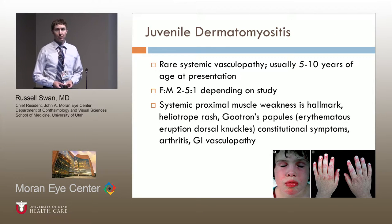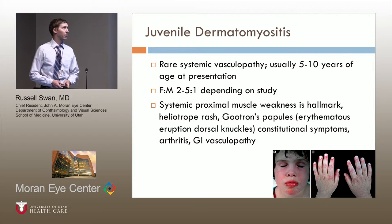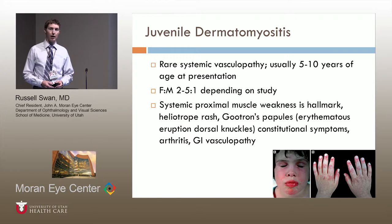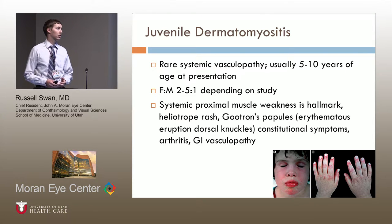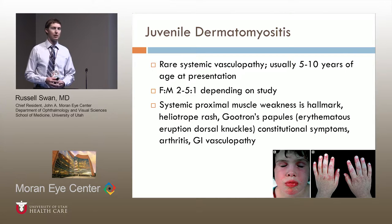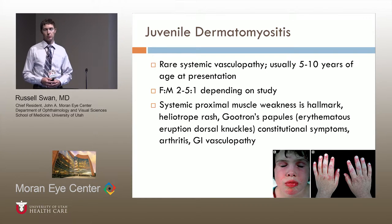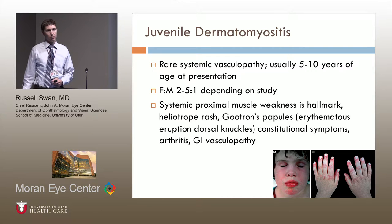Juvenile dermatomyositis is a rare systemic vasculopathy that usually occurs in young children, typically between ages five and ten, with a slight female-to-male predominance of two to five to one depending on the study. The classic findings are systemic muscular weakness, the heliotrope rash, Gottron papules, and associated constitutional symptoms, which were very notable in our patient. You can also have a GI vasculopathy, which can cause significant issues with nutrition.